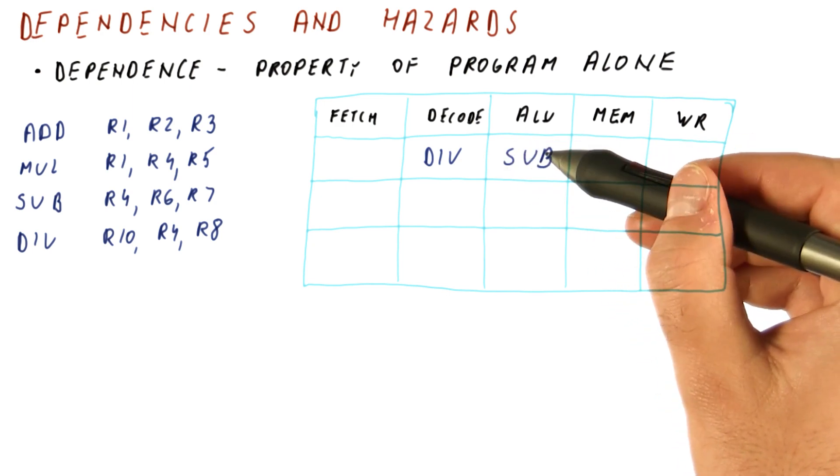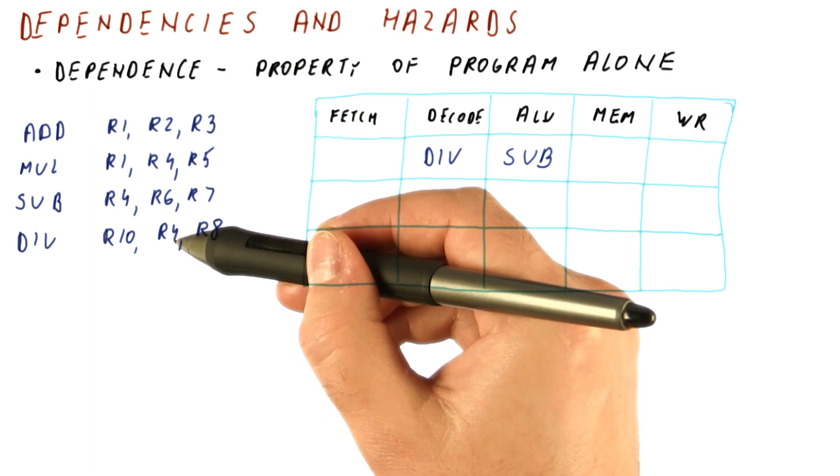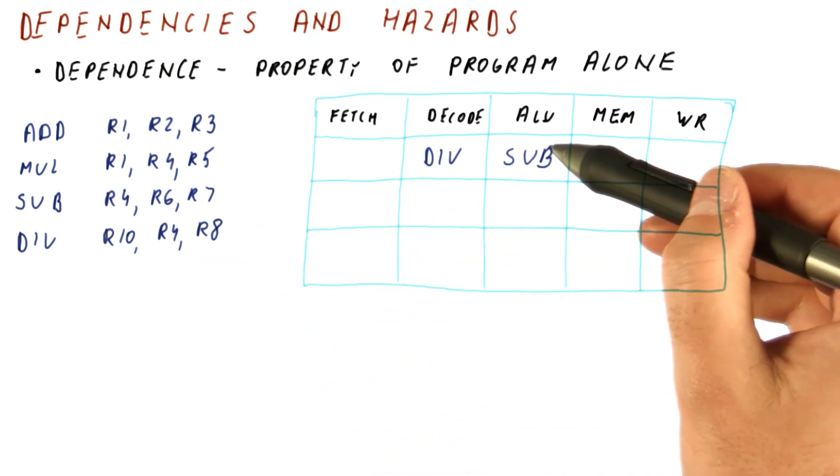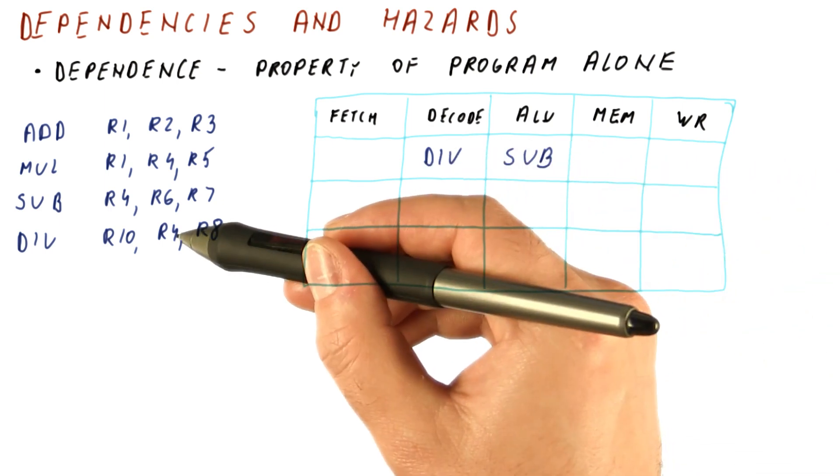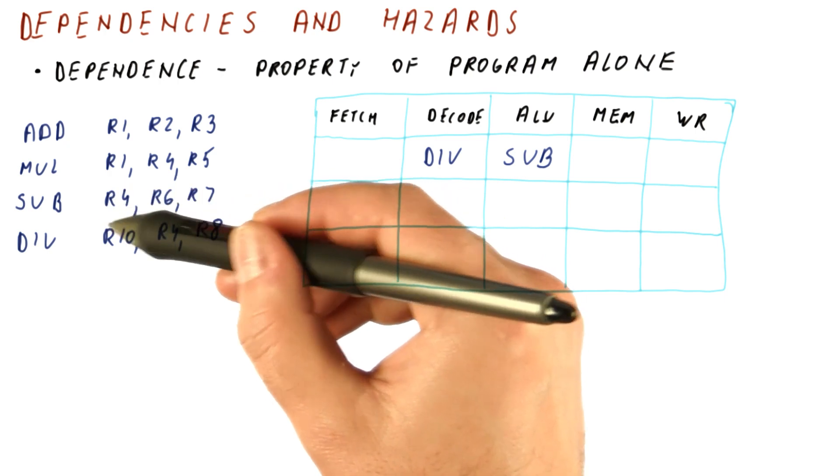The divide is reading R4 in a cycle where the subtract is here. Clearly, at that time, subtract didn't put its R4 value in the register R4. It is actually just computing that value. So when the divide reads register R4, it's reading a stale value of R4 that existed before the subtract.